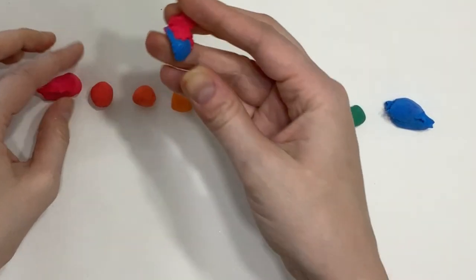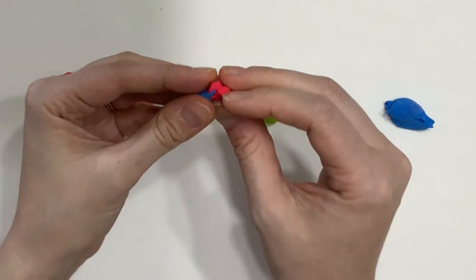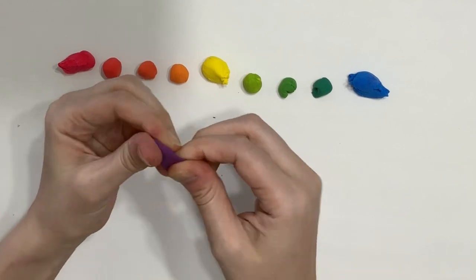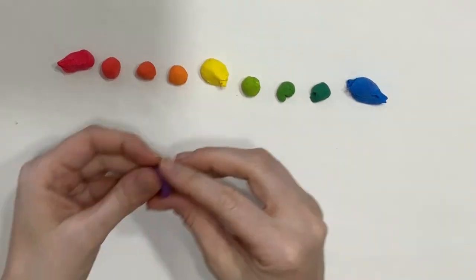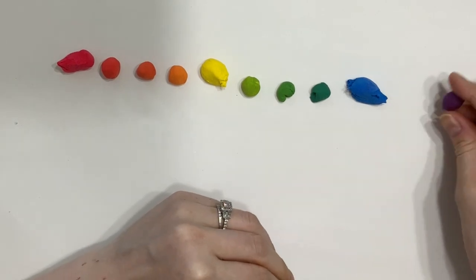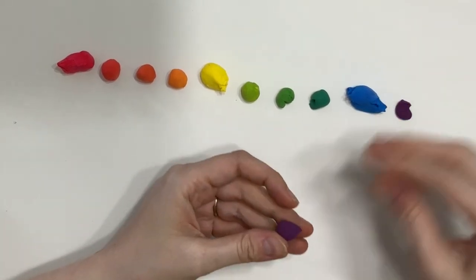Since blue is our darkest color in this combination, we're going to use a little bit more red than blue. Once we have our purple, we're going to break it up into three pieces. That way we can add in our two tertiary or intermediate colors.